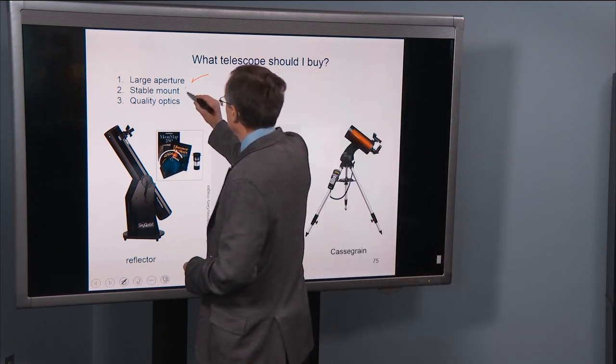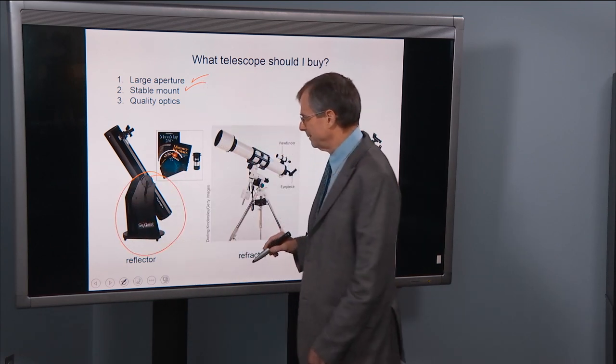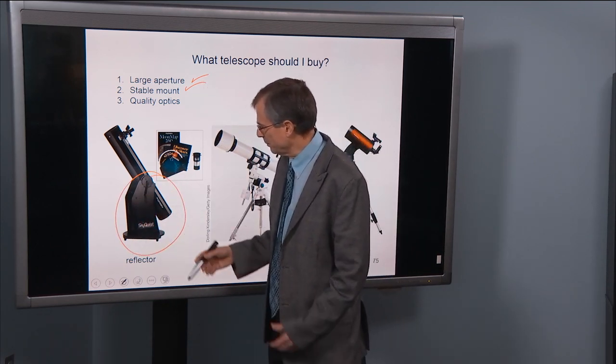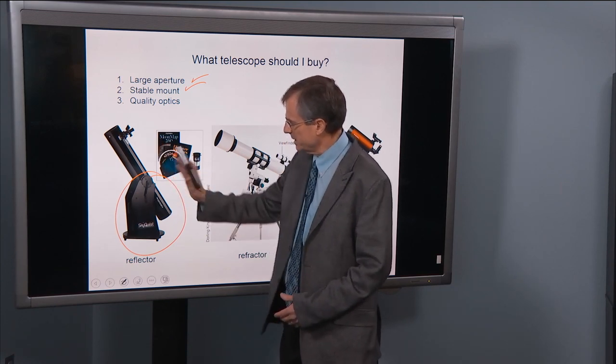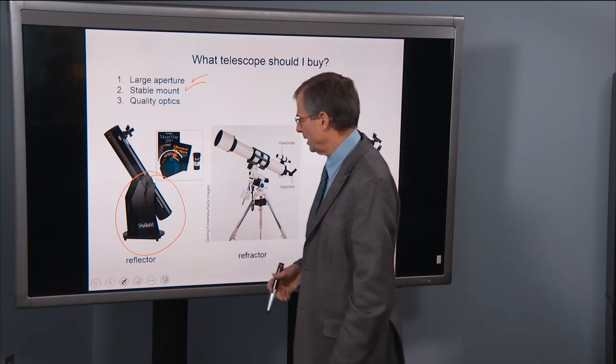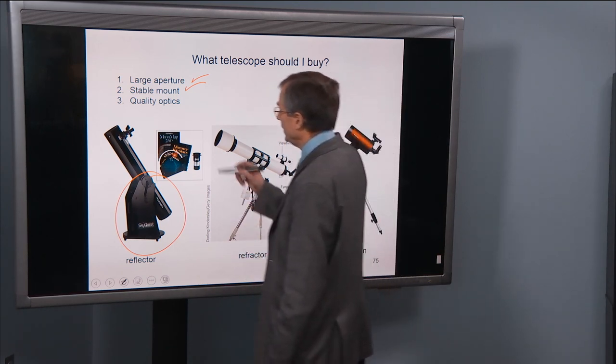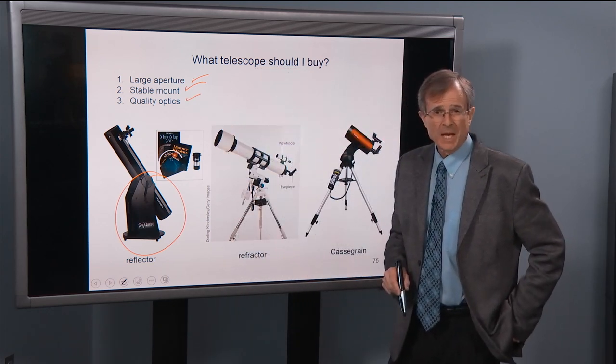A stable mount. These Dobsonian mounts are rock solid. It looks like a Lazy Susan on the bottom. And then the telescope tube just slides up and down. And then the base just swivels like a Lazy Susan. They're rock solid. The image doesn't waver. And then finally, quality optics.